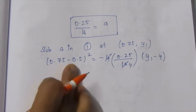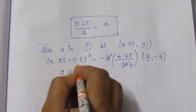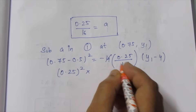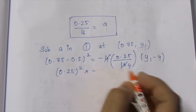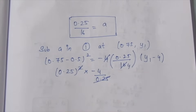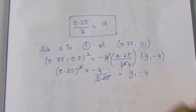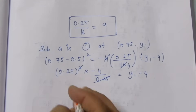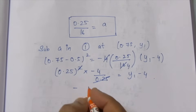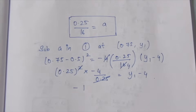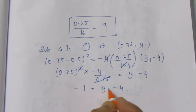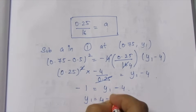0.75 minus 0.5 equals 0.25. So 0.25 squared equals 0.0625. After cancelling 0.25, we get: minus 1 equals y1 minus 4. Therefore, y1 equals 4 minus 1.